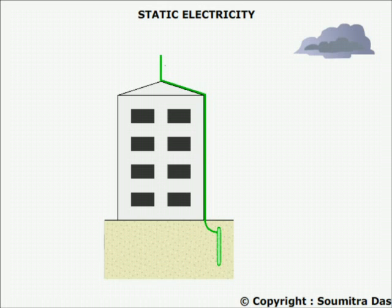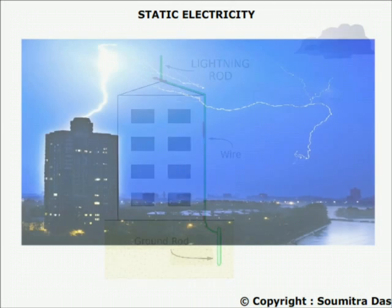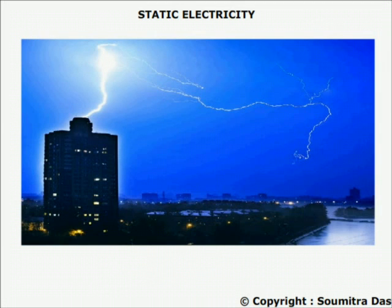Therefore, the electrostatic discharge from the cloud is arrested by the lightning conductor, from where it can easily reach deep below the earth's surface and saves the building from damage.